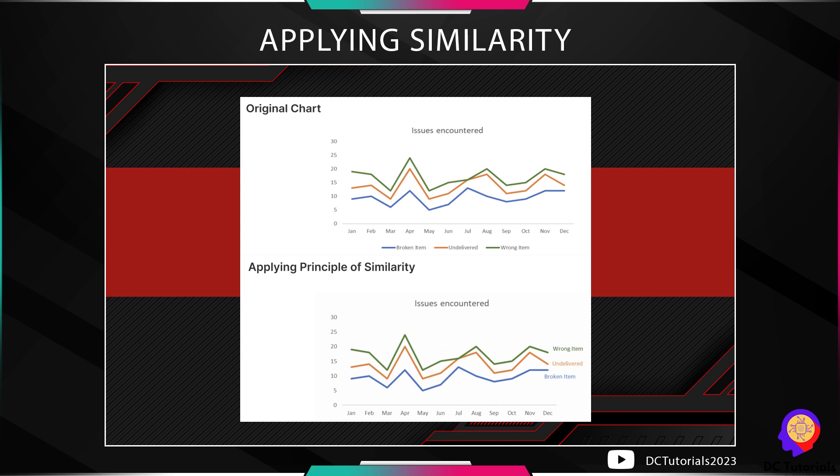Applying the principle of similarity to our chart, we can change the color of the labels to match the color of their corresponding lines, so we can easily identify them as similar — that they belong to one group.